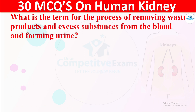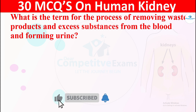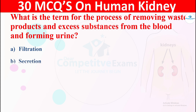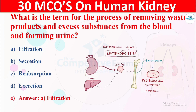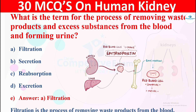Question 18: What is the term for the process of removing waste products and excess substances from the blood and forming urine? The options are: A) filtration, B) secretion, C) reabsorption, or D) excretion. The right answer is filtration. Filtration is the process of removing waste products from the blood.